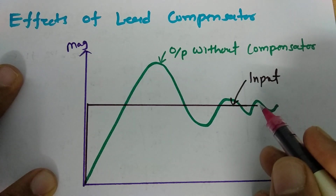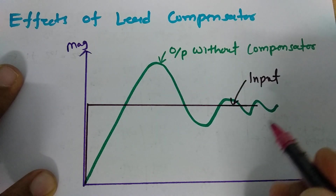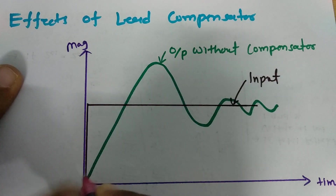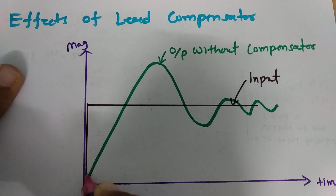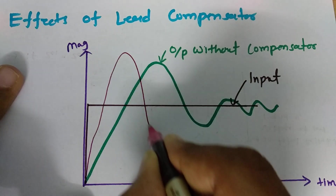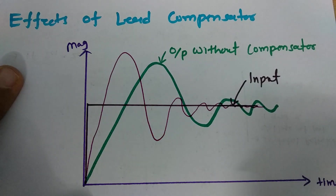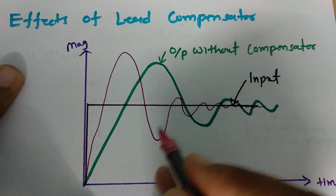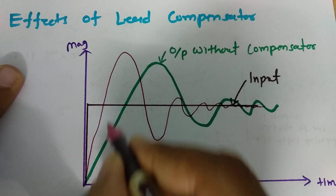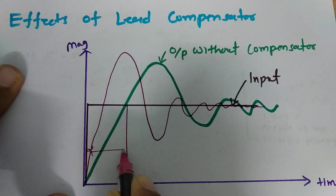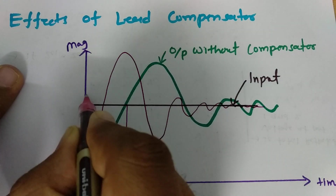So if I have an input like this and its response is happening like this, now in this response, if I add a lead compensator, I'll first draw this and then explain what is happening. You'll find this is what the response looks like with the lead compensator. Previously, rise time was this much, and now with this system, rise time is this much.